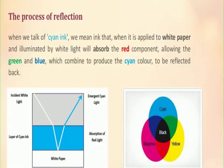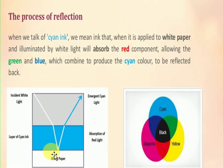Let us understand the process of reflection. When we talk about cyan ink, we mean ink that, when applied to white paper and illuminated by white light, it will absorb the red component, allowing the green and blue to combine and produce cyan color, which is reflected back. In this figure, we can see that the cyan ink applied on the white paper — when incident light passes through it, it gives us the cyan color from the process of reflection.